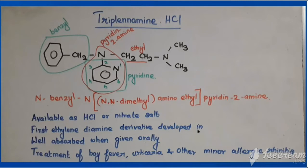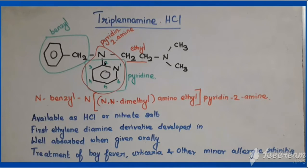Tripelennamine is the first ethylene diamine derivative developed in the US. It is well absorbed when given orally and is used in the treatment of hay fever, urticaria, and other minor allergic rhinitis. In summary, tripelennamine has a pyridine ring with an amine at the second position; that nitrogen has benzyl on one end and N,N-dimethylaminoethyl on the other end — making it an ethylene diamine derivative.